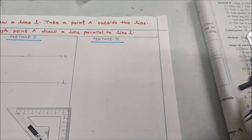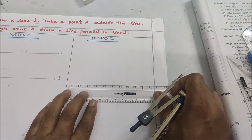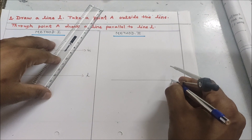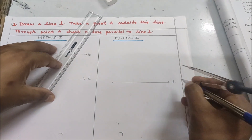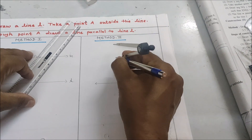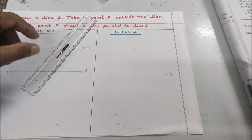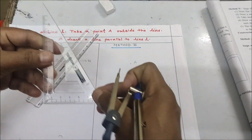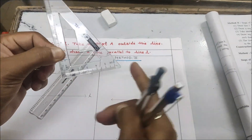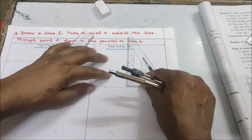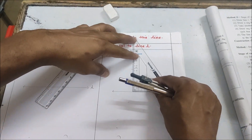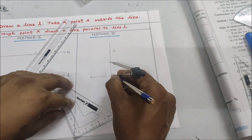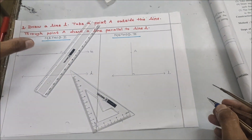Now we will see the second method. We will draw the same line l first. Now we will take point A outside the line. We will make a perpendicular to line l from point A. Again we take the set square: one edge lies on the line and the other edge touches point A. You can see the perpendicular being drawn from A to line l.